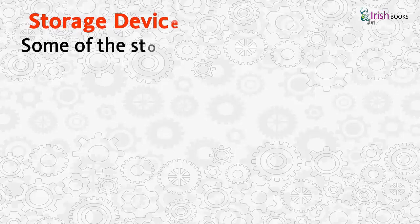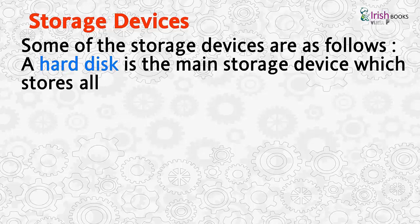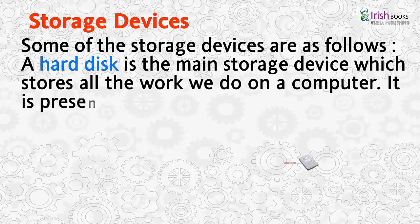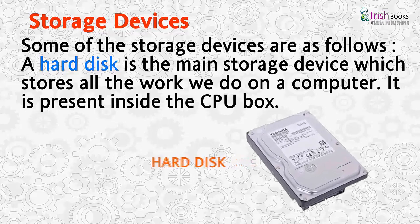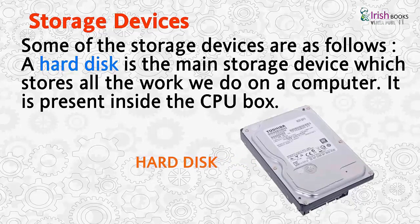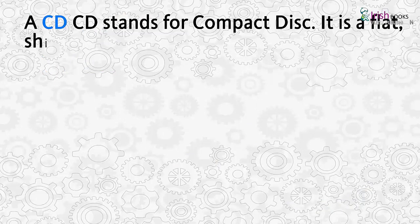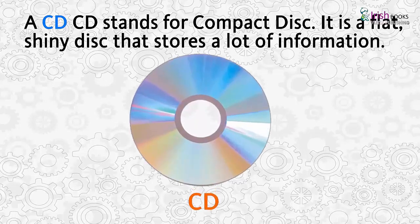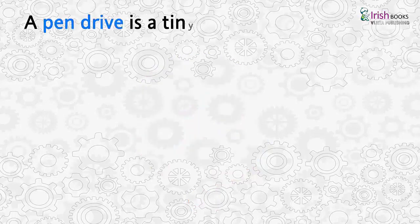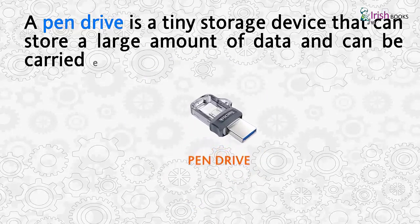Some of the storage devices are as follows. A hard disk is the main storage device which stores all the work we do on a computer. It is present inside the CPU box. A pen drive is a tiny storage device that can store a large amount of data and can be carried easily.